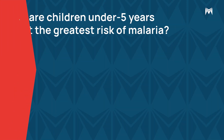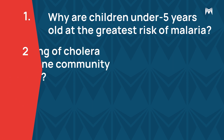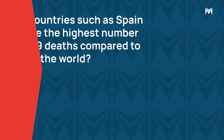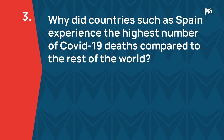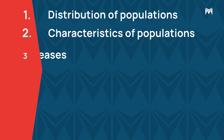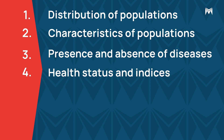The question becomes: why are children under five years old at the greatest risk of malaria? Why are people dying of cholera outbreaks more in one community compared to others? Why did countries such as Spain experience the highest number of COVID-19 deaths compared to the rest of the world? The answers to these questions lie in the study of the distribution of populations, their characteristics, the presence and absence of diseases, their health status and indices in fields such as epidemiology, which gives expression to the public as a collection of people.